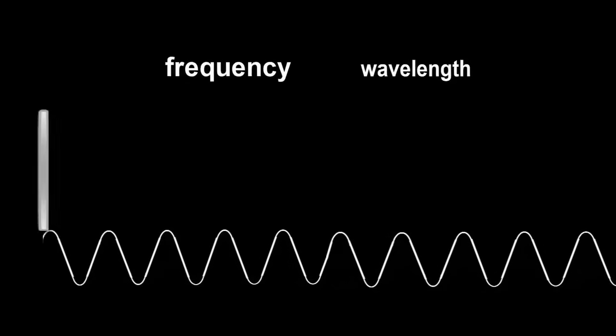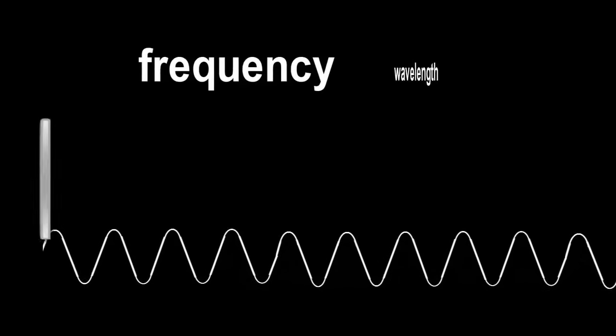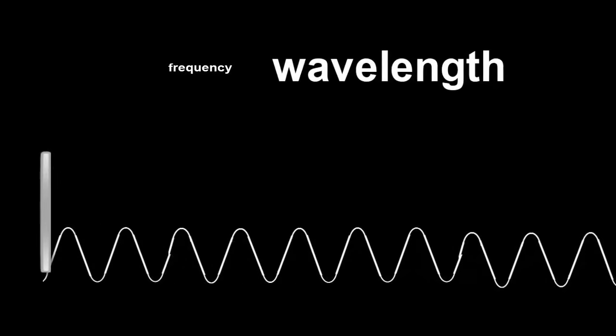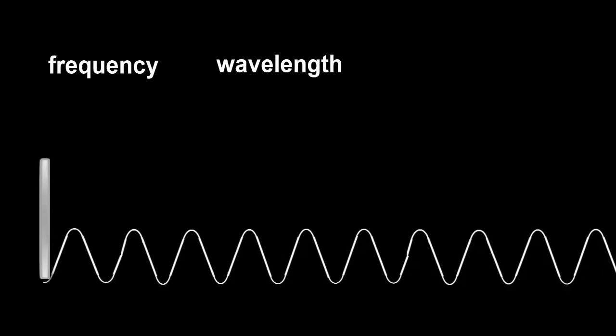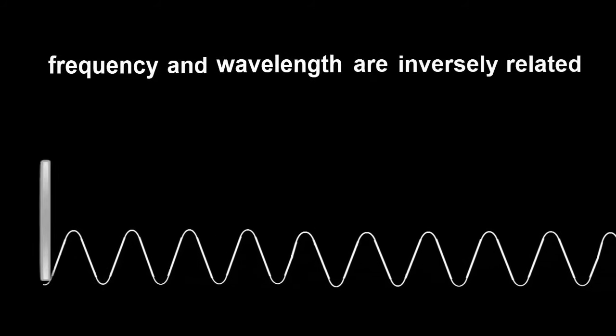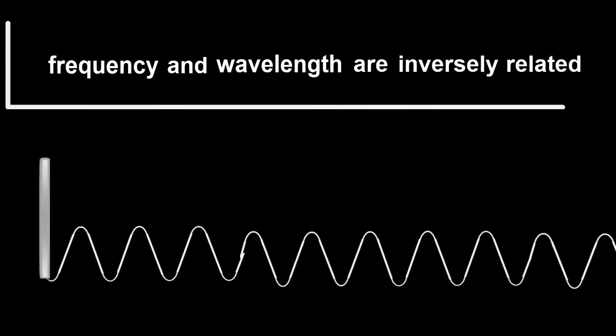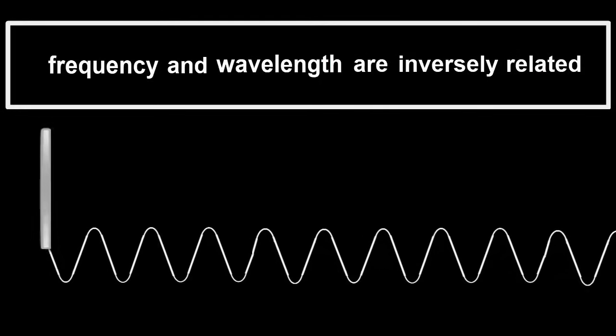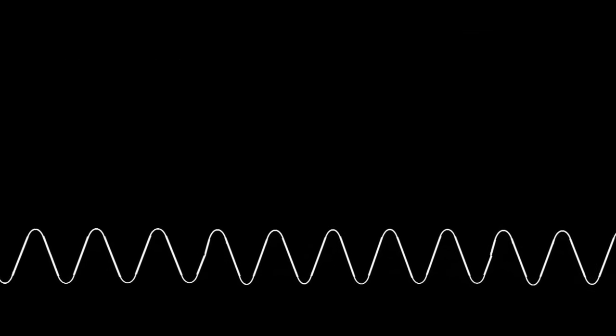This means that when frequency increases, wavelength decreases, and vice versa. So we can say that frequency and wavelength are inversely related. That makes sense. When we increase the frequency, more waves are squeezed in, reducing the distance between them.